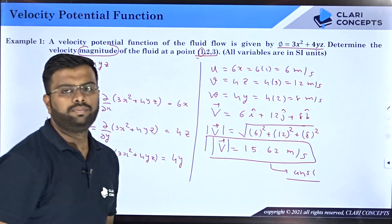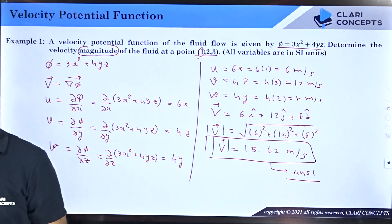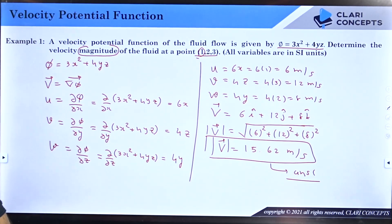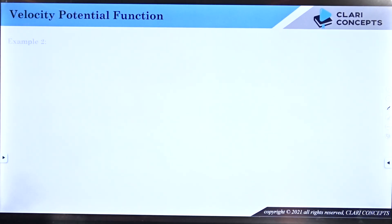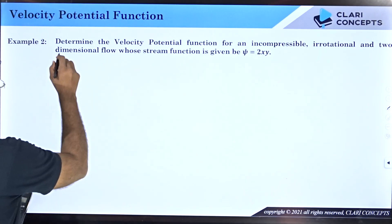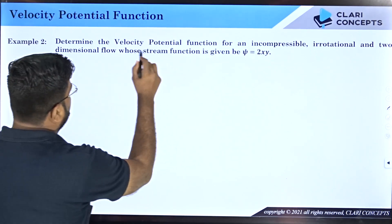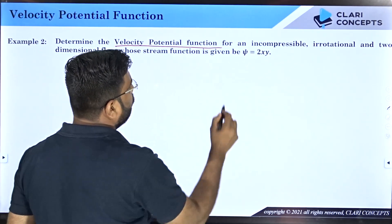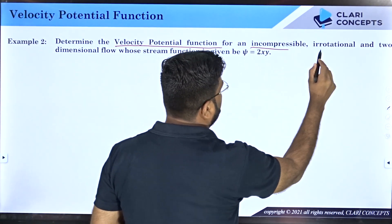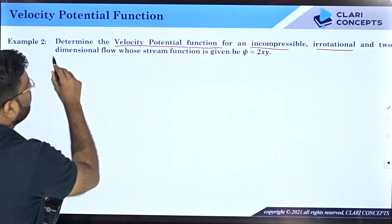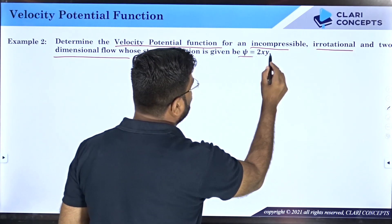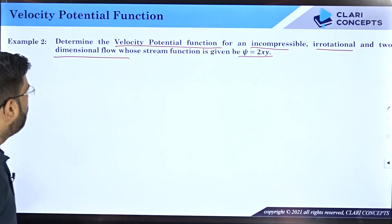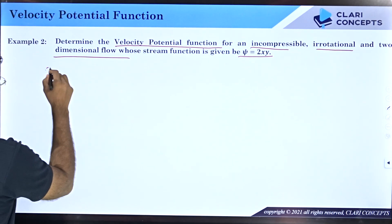So the velocity magnitude at the point (1, 2, 3) is 15.62 meters per second. Let me verify — yes, the answer is perfectly correct. Now we will look at another example: determine the velocity potential function for an incompressible, irrotational, and two-dimensional flow field whose stream function is given as ψ = 2xy.